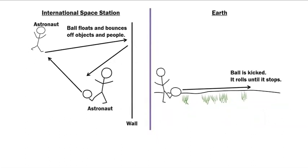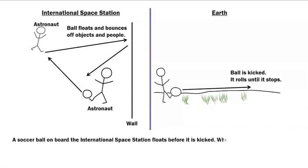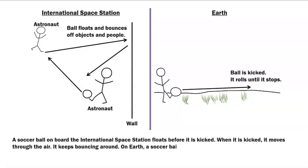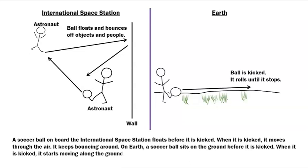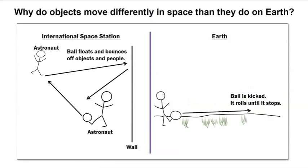Let's add an explanation to our model. A soccer ball on board the International Space Station floats before it is kicked. When it is kicked, it moves through the air and keeps bouncing around. On Earth, a soccer ball sits on the ground before it is kicked. When it is kicked, it starts moving along the ground. It rolls until it stops.